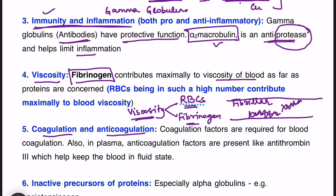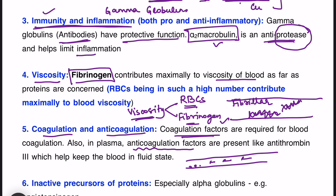Then there is coagulation and anticoagulation. Blood has coagulation factors which help in blood coagulation — for example, when there is an injury and blood flows outside blood vessels, coagulation factors stop it. There are also anticoagulation factors, which are also proteins, that prevent unnecessary coagulation of blood during normal flow. Examples include antithrombin 3, protein C, and protein S — these will be discussed in detail when we cover the clotting mechanism.